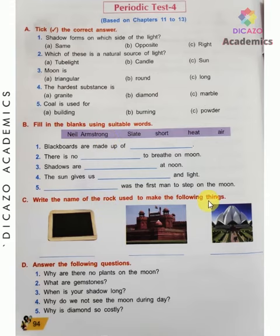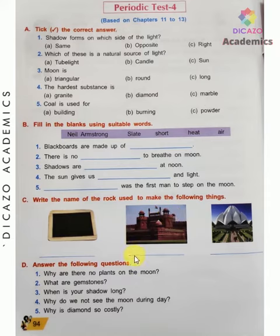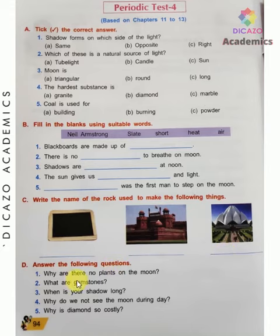Write the name of the rocks used to make the following things: first is slate, second is sandstone, and the third rock is marble. Why are there no plants on the moon? There are no plants on the moon because there is no water and air present on the moon.